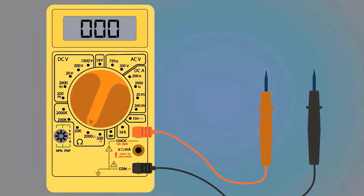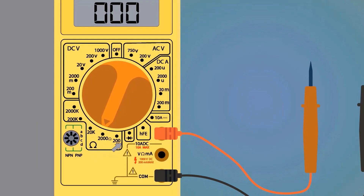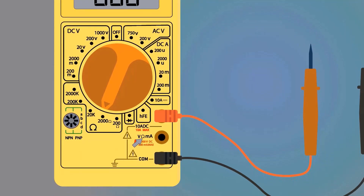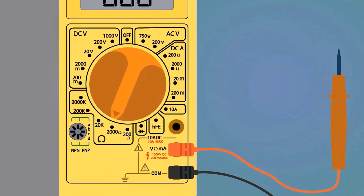How to measure resistance with the help of a multimeter. Take the multimeter — the arrow points out the measuring range of resistance, which is 200 ohms to 2000 kilo-ohms. Here is the ohm sign, which tells us we are measuring resistance. The red probe should be connected here. Select the maximum range of resistance.